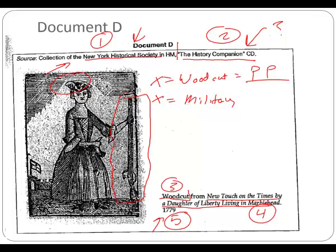What else do we have with the military theme? There's a fort in the background — very good. Does anyone recognize that flag? The rough design — Maryland. The yellow, black, and red. So you now know where Marblehead is. We're pulling a lot of information from this image: Marblehead is located in Maryland, connecting to the American Revolution context.